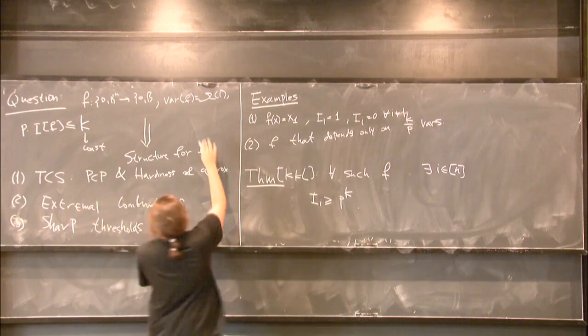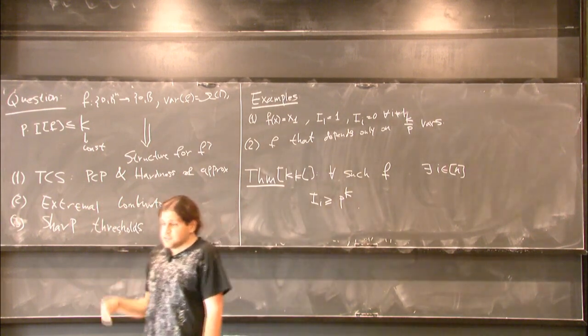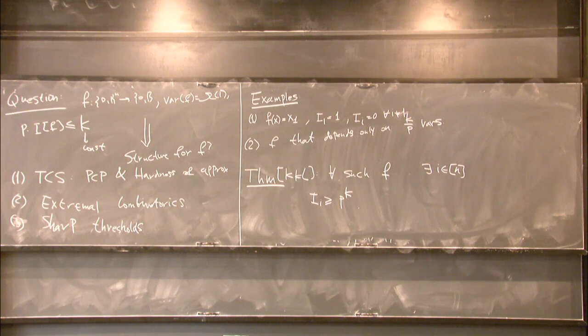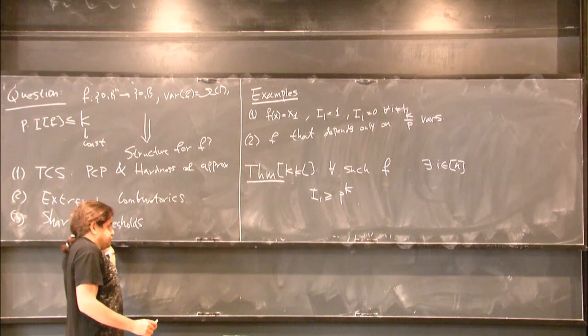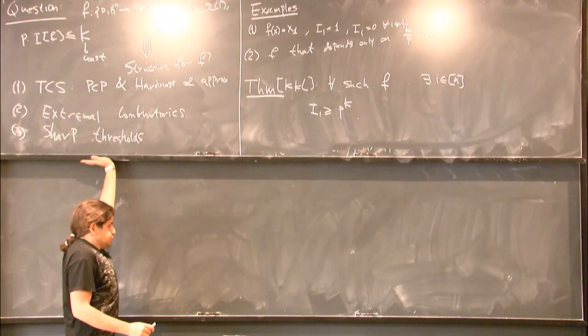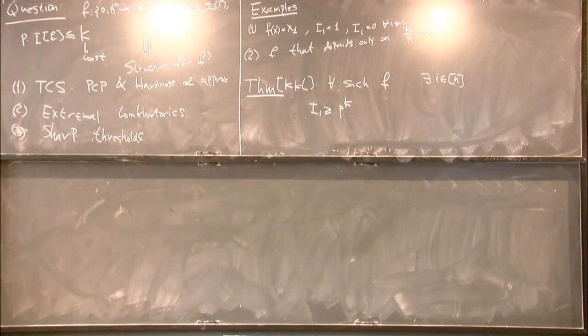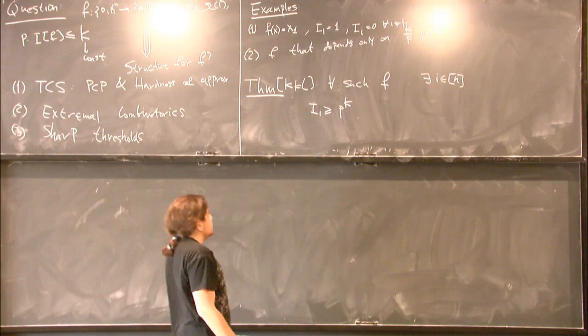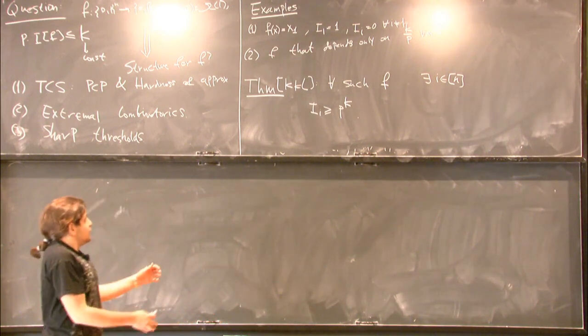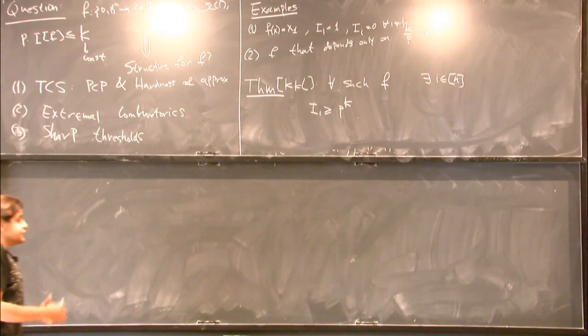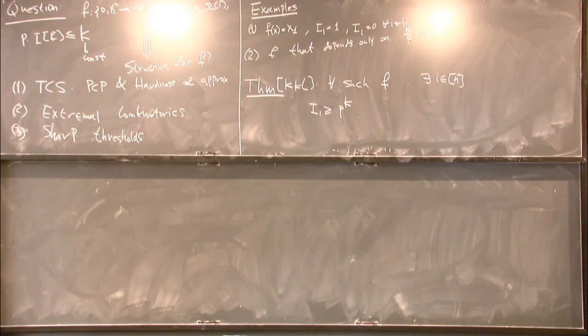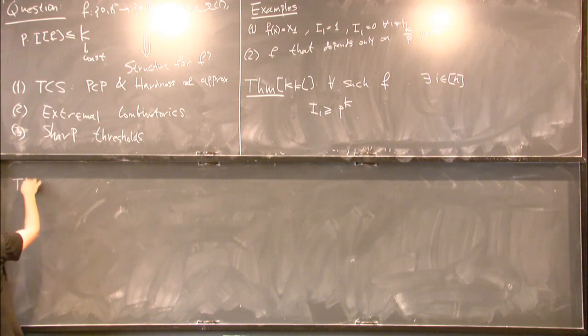You want it to be far from constant and have small influence, because you can take constant functions, then nothing interesting is happening. So, this is a nice theorem, but it still doesn't give us what we wanted. It still doesn't tell us that the function only depends on constantly many variables. But this is, in fact, true, and this was proved shortly after the KKL theorem by Friedgut.